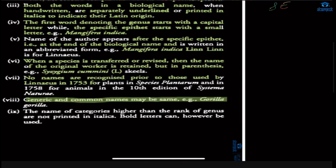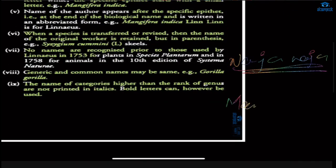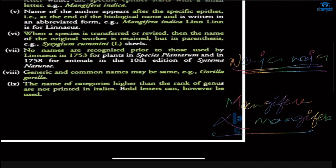The seventh rule: generic and common names may be the same — for example, Gorilla gorilla, where genus and species names are the same. The names of categories higher than the rank of genus are not printed in italics; bold letters can however be used. In animal nomenclature, the same generic name and specific epithet can be used — like Naja naja. But in the plant system, we cannot write the same genus and same species name, like Mangifera mangifera.